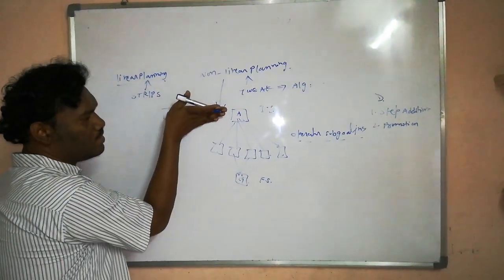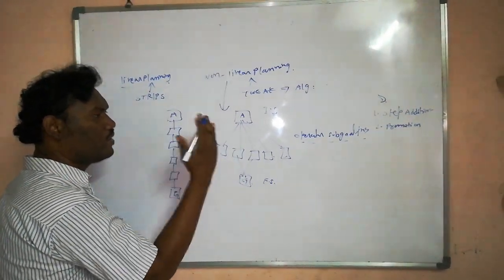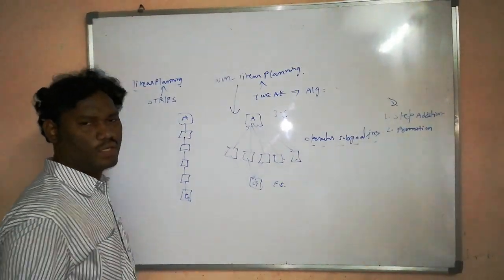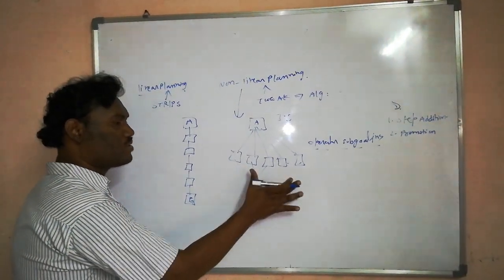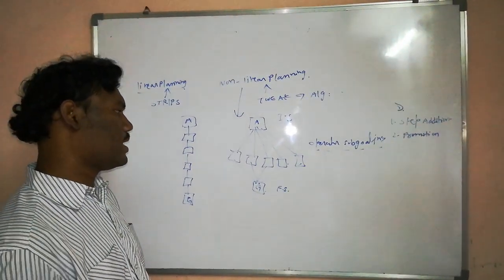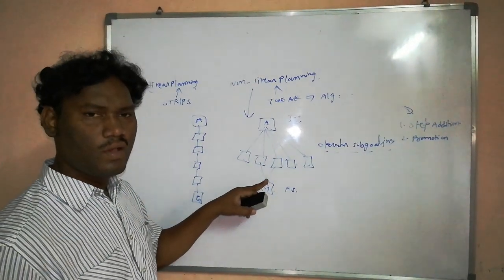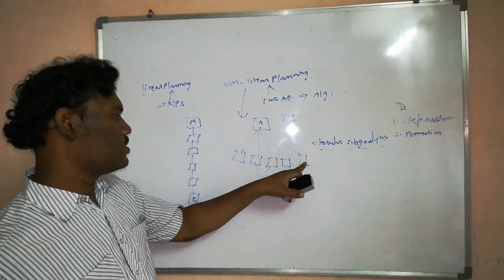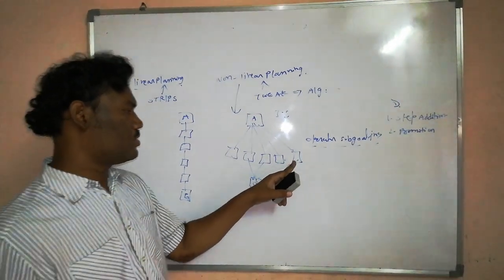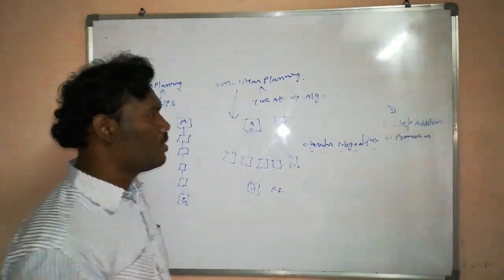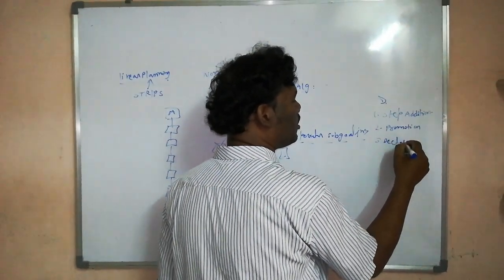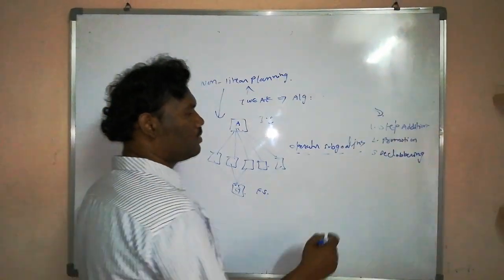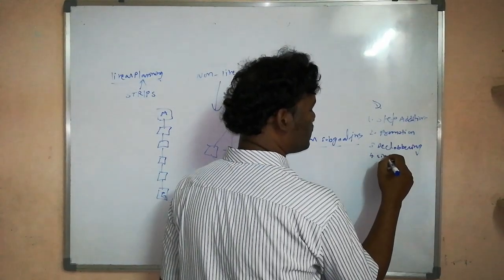When we start from the initial state to the final state, we first try to divide the actual problem into a set of modules. These modules are executed sequentially or simultaneously. We don't know which module finishes execution first — it could be this one or that one. The third step is declobbering, which means placing one step before another step.